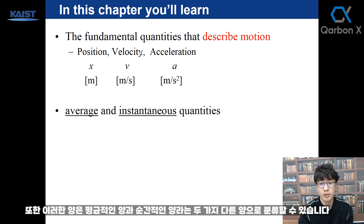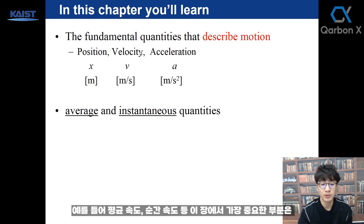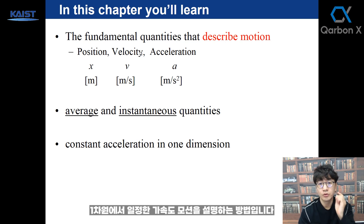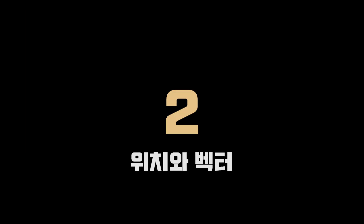These quantities can be categorized as two different types: average and instantaneous quantities. For example, average velocity and instantaneous speed. The most important part of this chapter is how you describe a constant acceleration motion in one dimension.